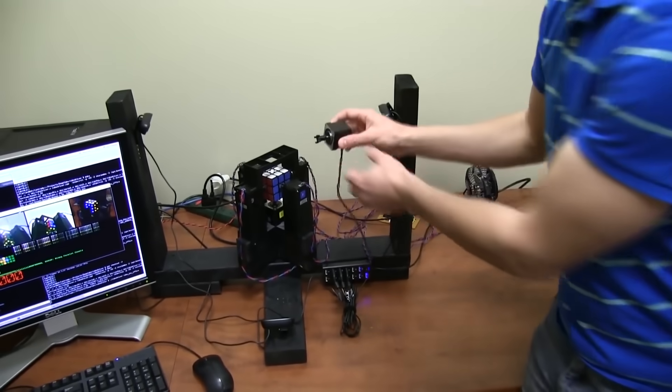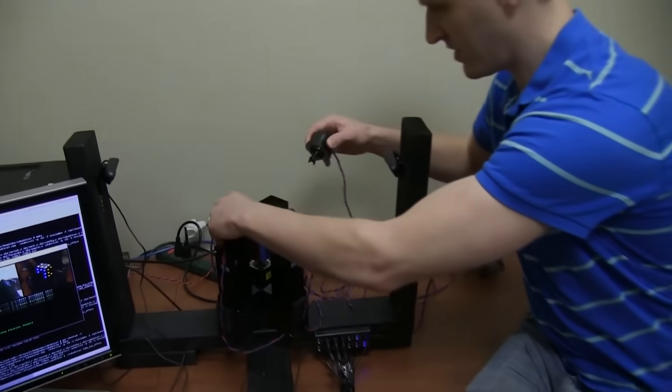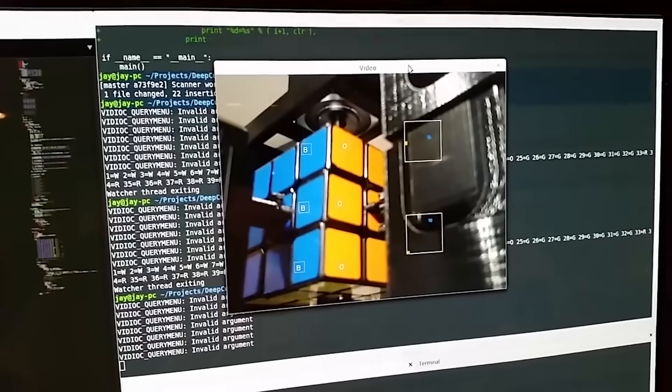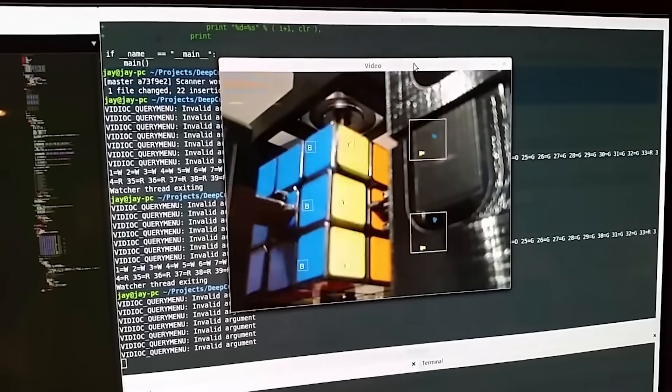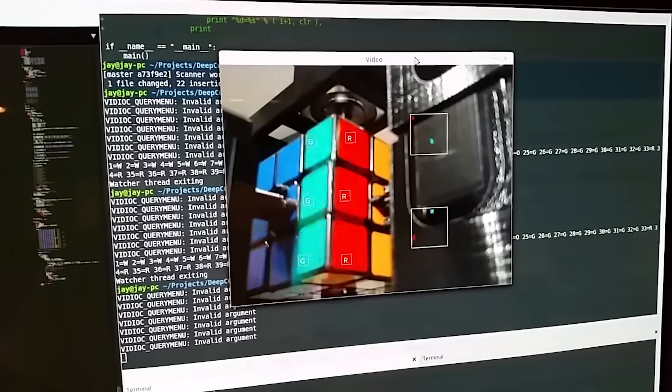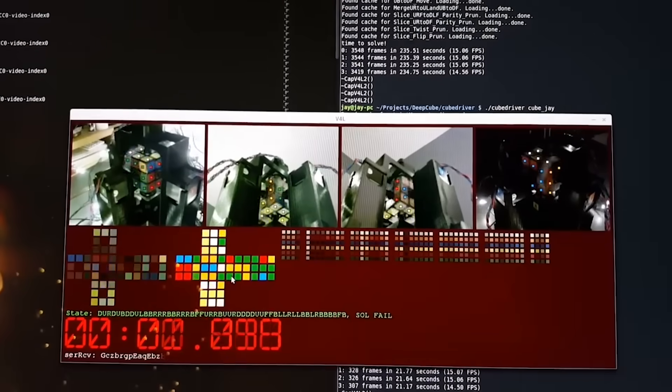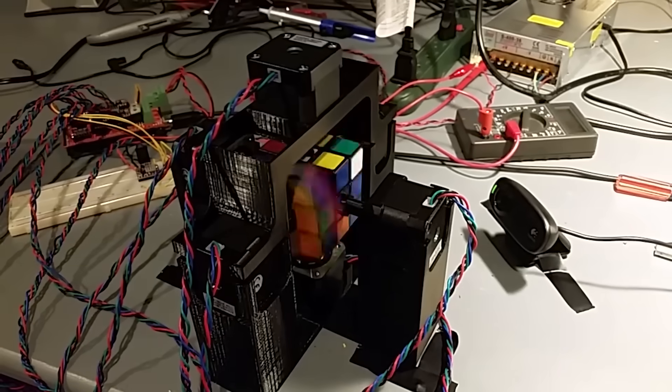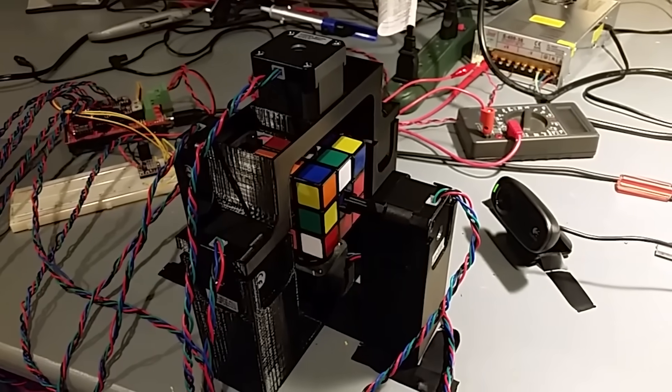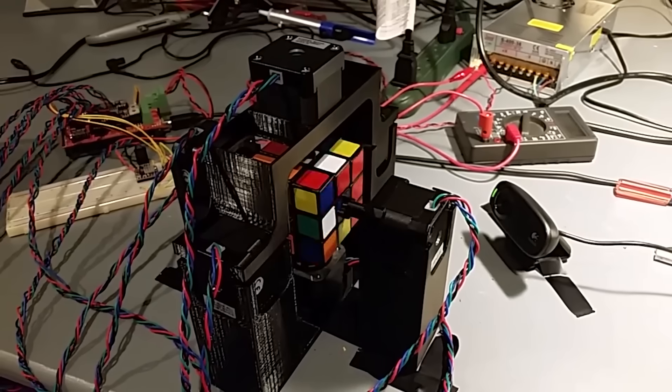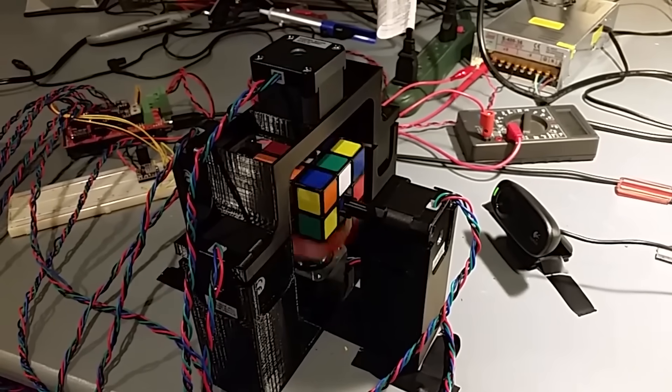Four USB webcams are used to help determine the state of the cube. The camera data is fed into software running on a Linux PC that determines the cube state, and this is relayed to the Kosiemba algorithm. The algorithm then determines a set of moves to solve the Rubik's Cube, and the instructions are sent to the stepper motors.